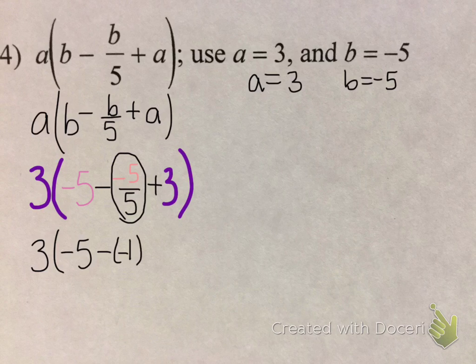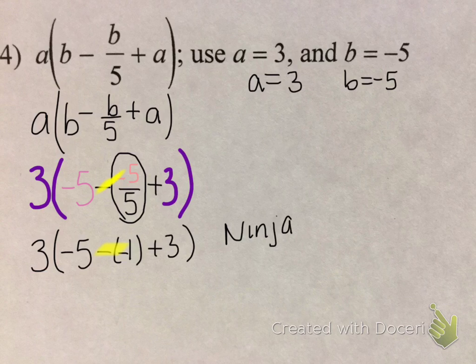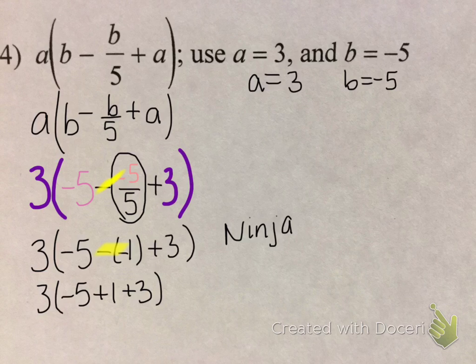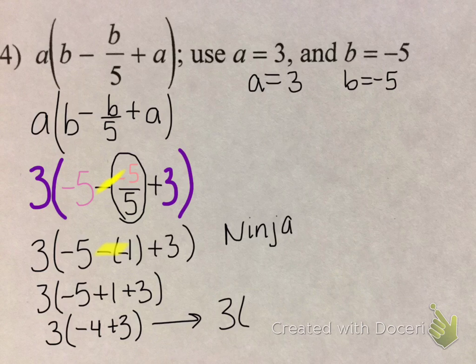Now be careful. When this happens, a double negative creates a ninja flip. So this is 3 times negative 5 plus 1 plus 3 in our parentheses. Now we're going to follow our PEMDAS again, or order of operations, and simplify that parentheses piece. So negative 5 plus 1 plus 3 gives us negative 4 plus 3, which equals negative 1. The signs are different, so 3 times negative 1 gives us negative 3 as our final answer.